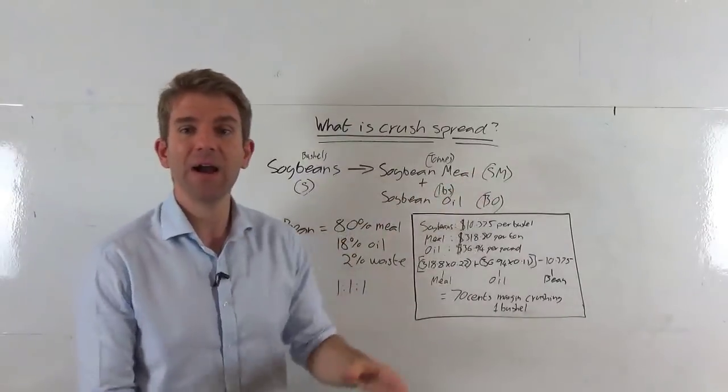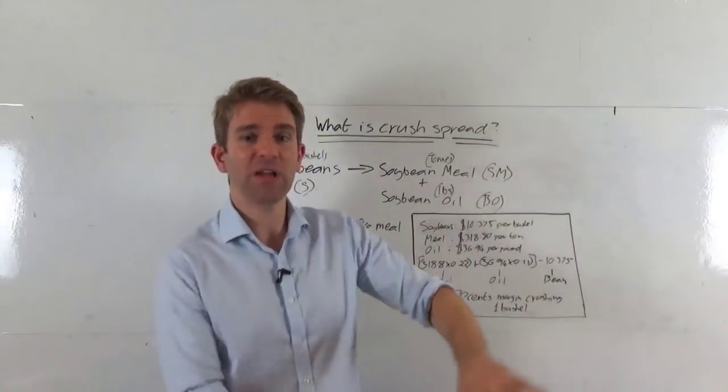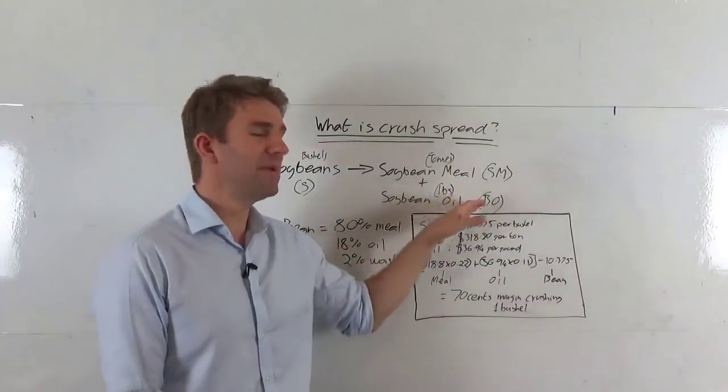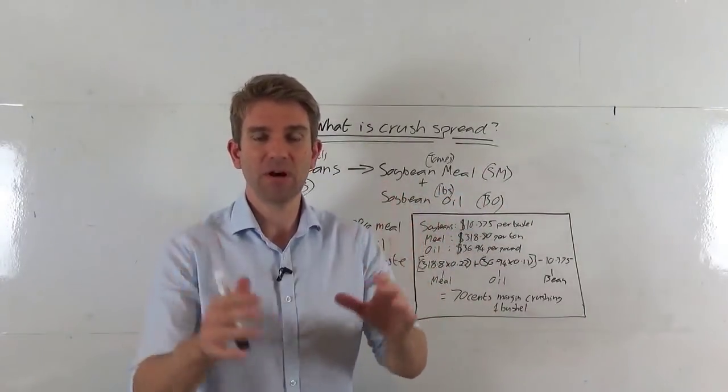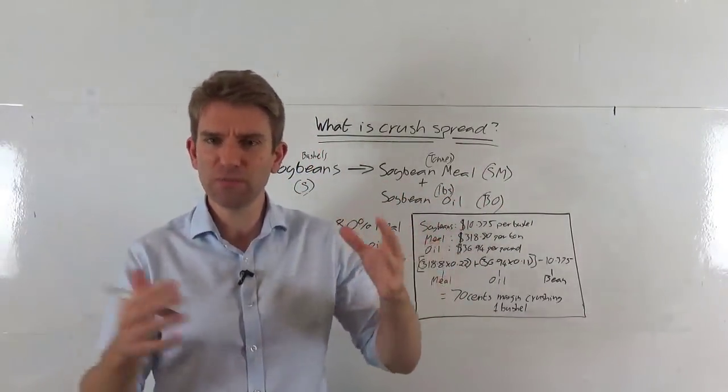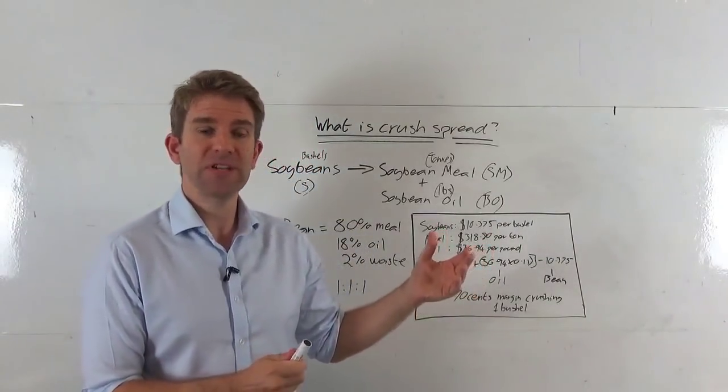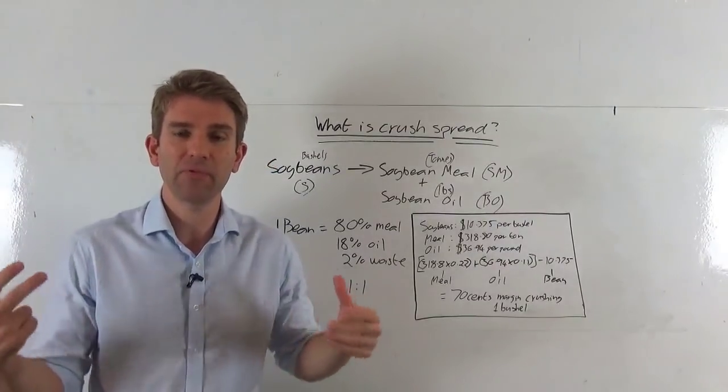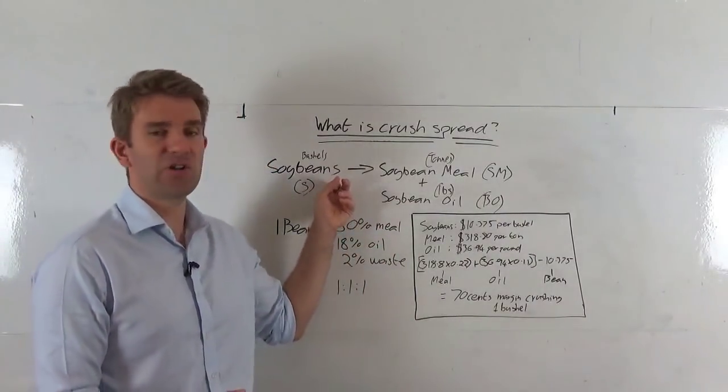Similarly the other way around, if soybean price goes low but these still remain relatively high, they can keep chucking in loads of beans at a low price, making a high price on the meal and the oil, they're making a decent margin. From a commercial perspective that's what they want, but obviously the people who are buying the meal and buying the oil aren't going to be wanting to pay higher prices for it.